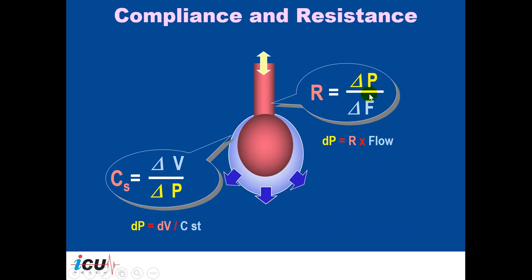Since resistance equals change of pressure divided by change of flow, the change of pressure equals resistance multiplied by flow. The higher the resistance and the higher the flow, the more pressure is needed to get the air through the airways. Similarly, static compliance equals change of volume divided by change of pressure, so the change of pressure equals change of volume divided by static compliance. The higher the volume and the lower the compliance, the more pressure needed to get the air into the lungs.